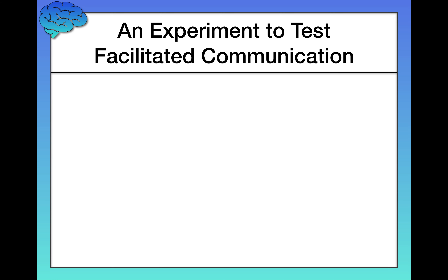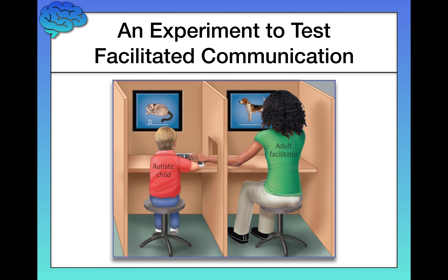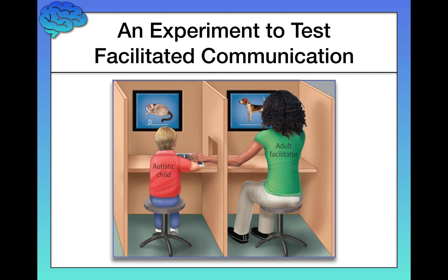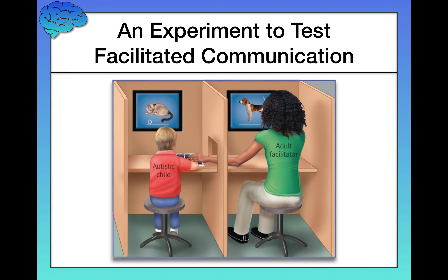We'll talk about experiments in a few videos, but I'll describe this one now. The setup was really simple. On the right we have the facilitator, on the left the child with autism. They both have a screen in front of them that displays images, and a center divider which makes it impossible for each person to see the other person's screen. The child with autism can only see their screen, and the adult facilitator can only see theirs.